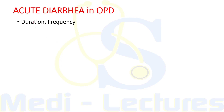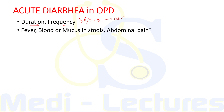In the OPD we will ask the patient about the duration of diarrhea to classify it as acute, persistent, or chronic; the frequency of stools per day, since more than six stools per 24 hours is considered severe illness and the patient will need admission; and the presence of fever, blood or mucus in stools, and abdominal pain — all of which suggest an infectious etiology.